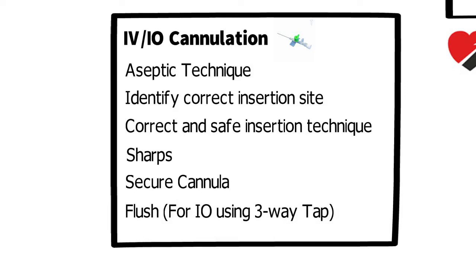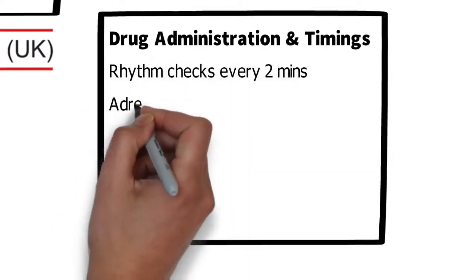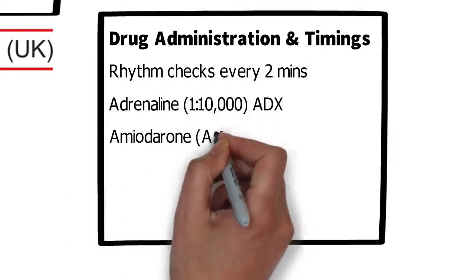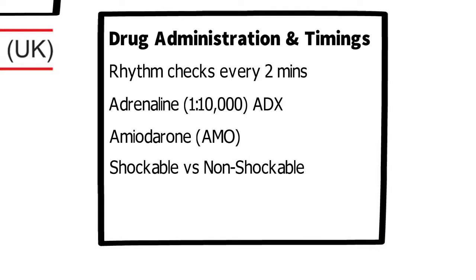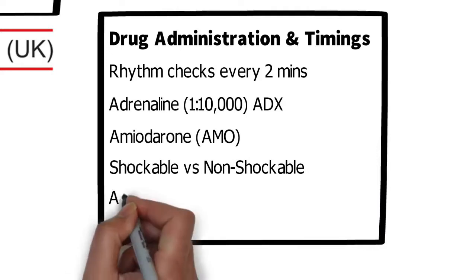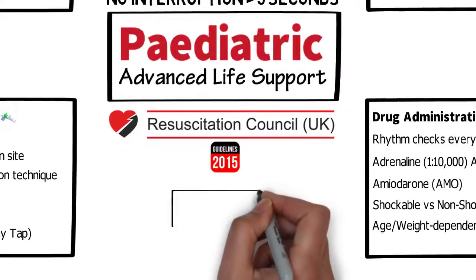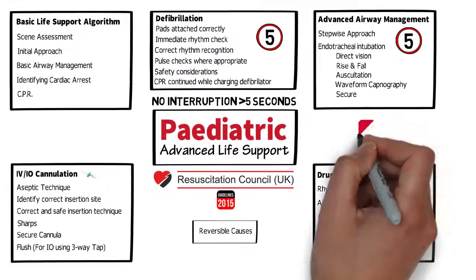Once IV access is gained we consider drug administration and timings, with general principles the same as adult ALS but with variations in dosages. Key points are rhythm checks every two minutes, administration of adrenaline 1 in 10,000 and amiodarone — with timings dependent on whether the patient is in a shockable or non-shockable rhythm. Dosages are age or weight dependent. We can then start to think about reversible causes.